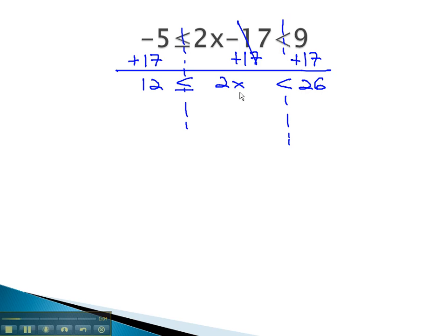Finally, to get the variable alone in the middle, we can divide by 2, and we must divide by 2 on all three parts. As we do, we get 6 is less than or equal to x, which is less than 13.